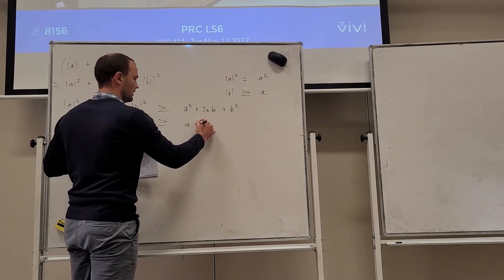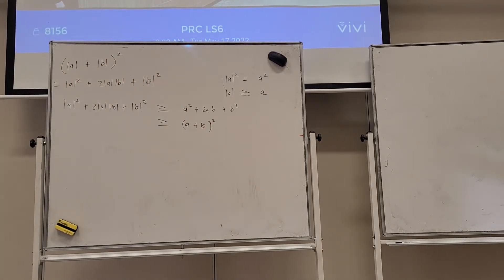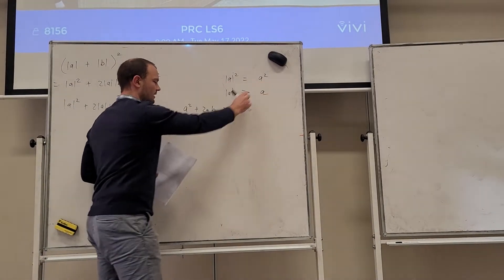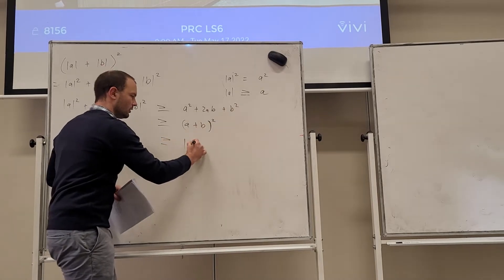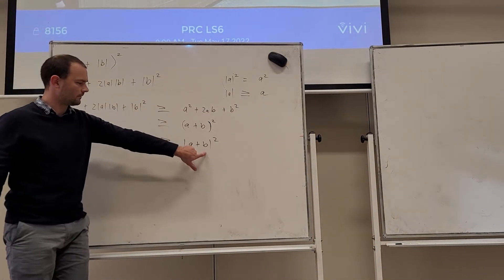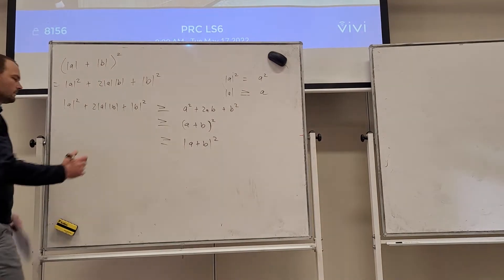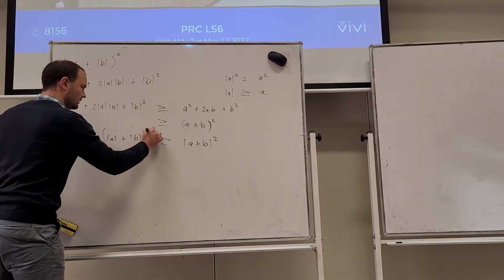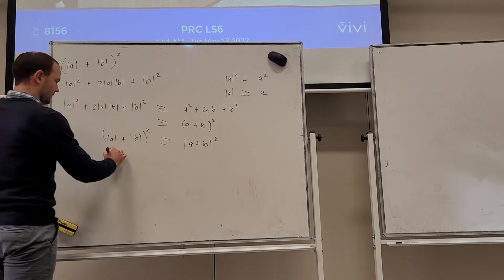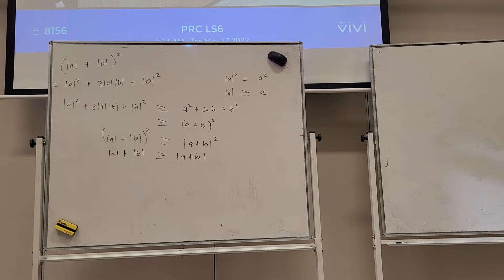Now A² + 2AB + B² becomes (A+B)². And since |A+B|² = (A+B)², we have on the right-hand side |A+B|², and on the left-hand side (|A|+|B|)². We can then square root both sides to get |A| + |B| ≥ |A+B|, and flip it around: |A+B| ≤ |A| + |B|. That's the best and most straightforward proof.